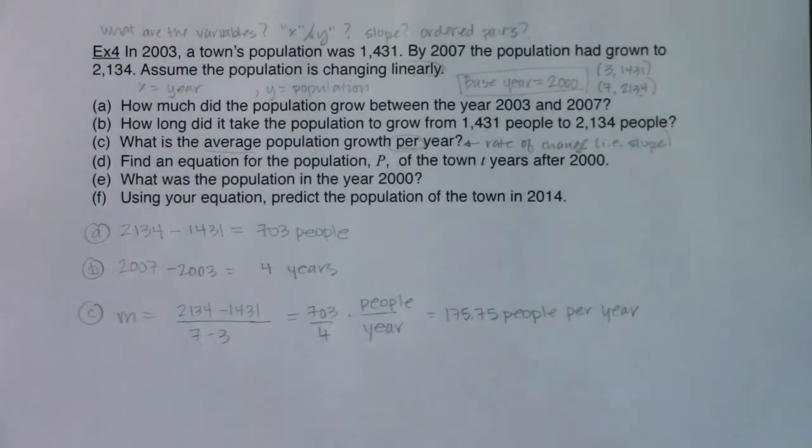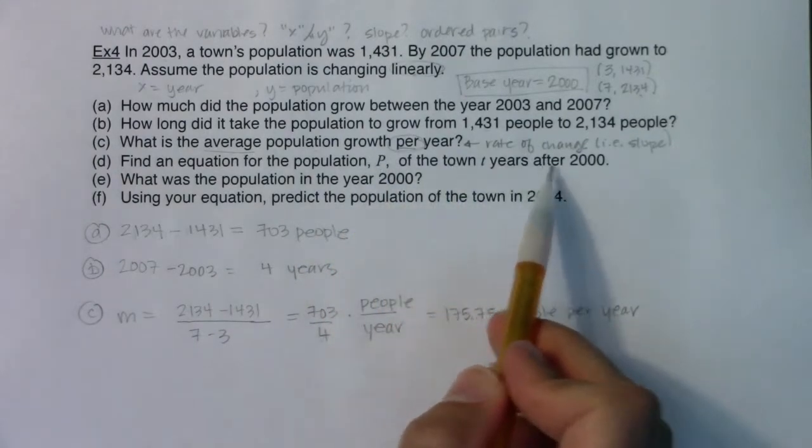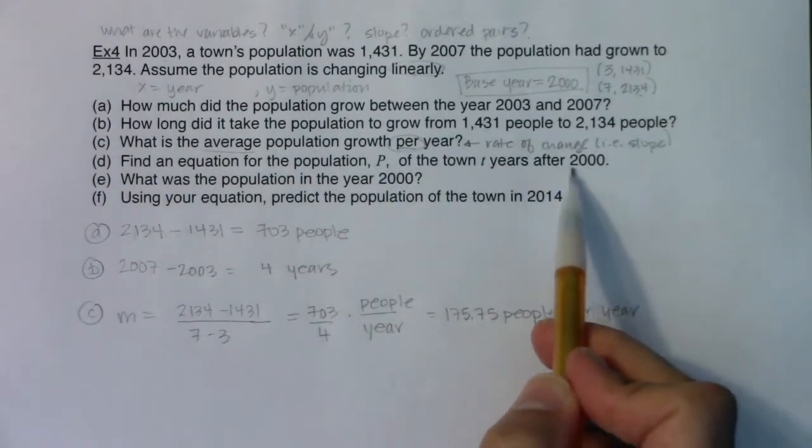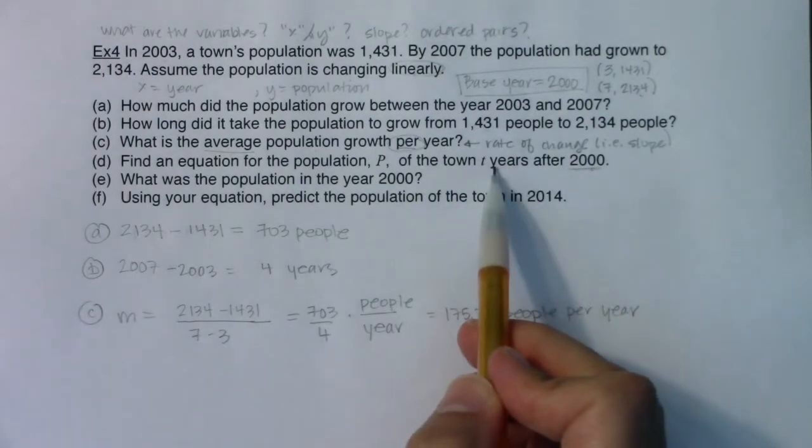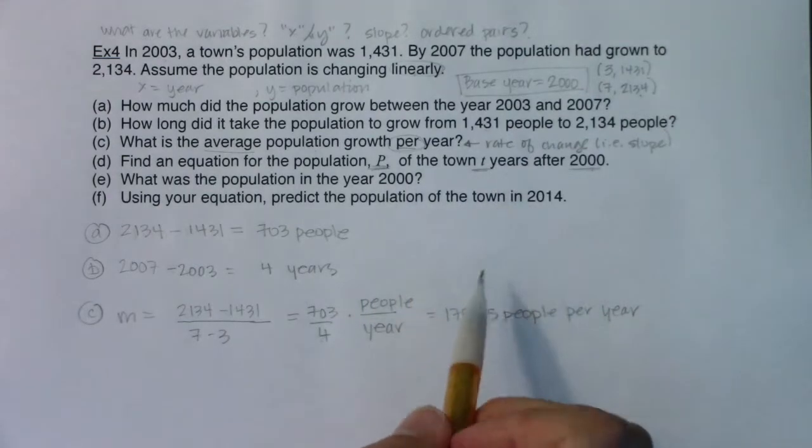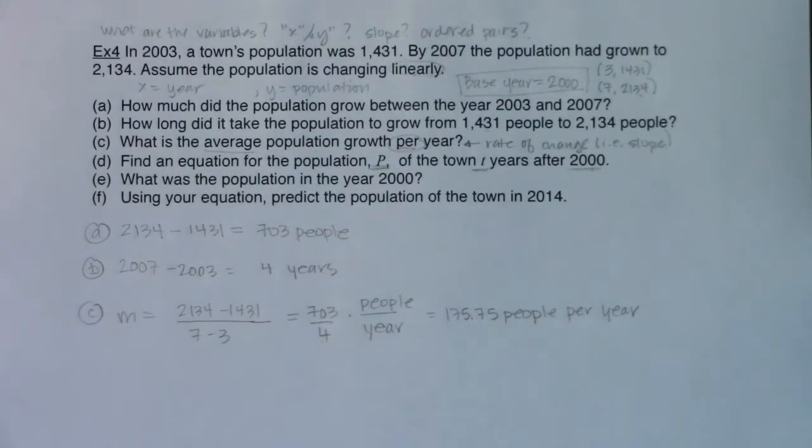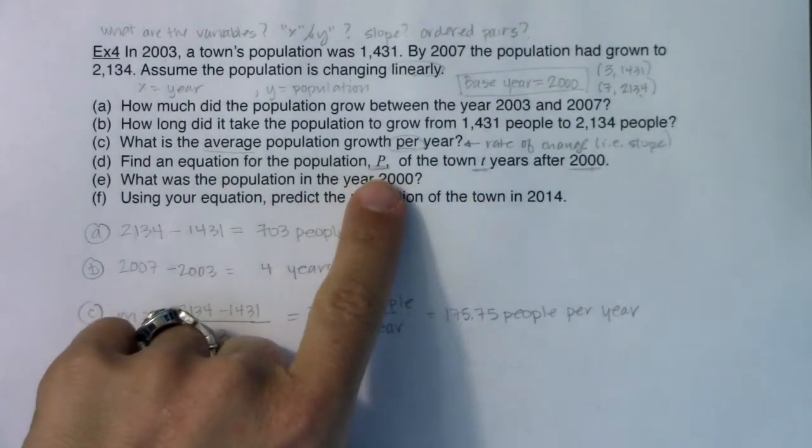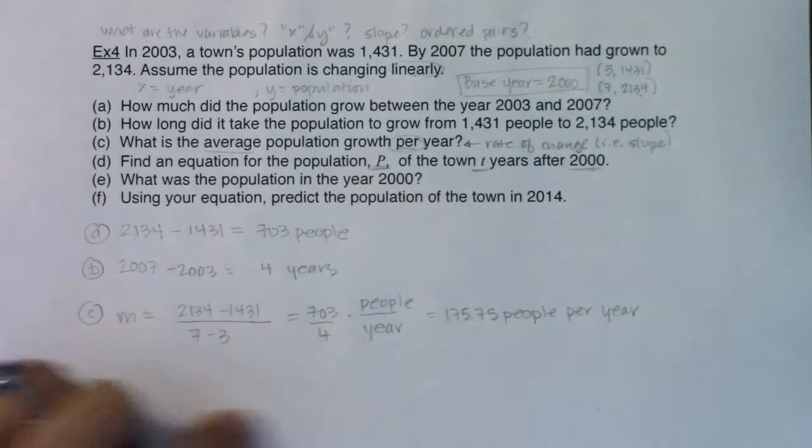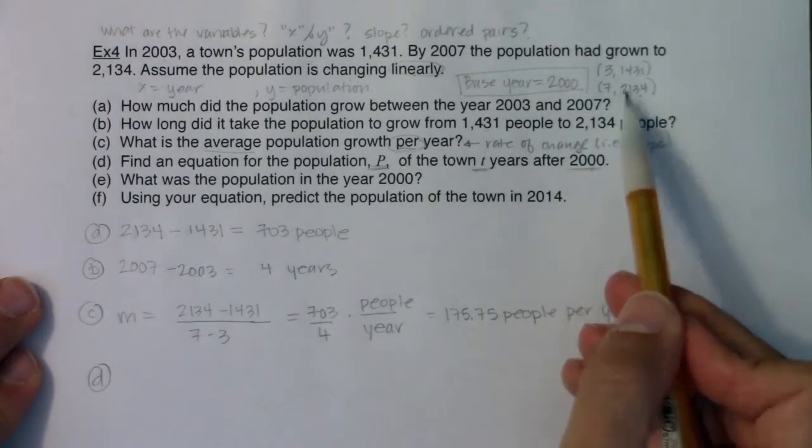Find an equation for the population P of the town T years after 2000. That's kind of lucky. I actually forgot that I was supposed to set my base here to 2000. We're going to use P and T, so I'm not going to use X and Y. I need to be careful with that. Now I'm going to do my work as if it were just point-slope form using Y's and X's, and then I'm going to convert my answer at the end to make sure I'm paying attention to the letters they're giving me.